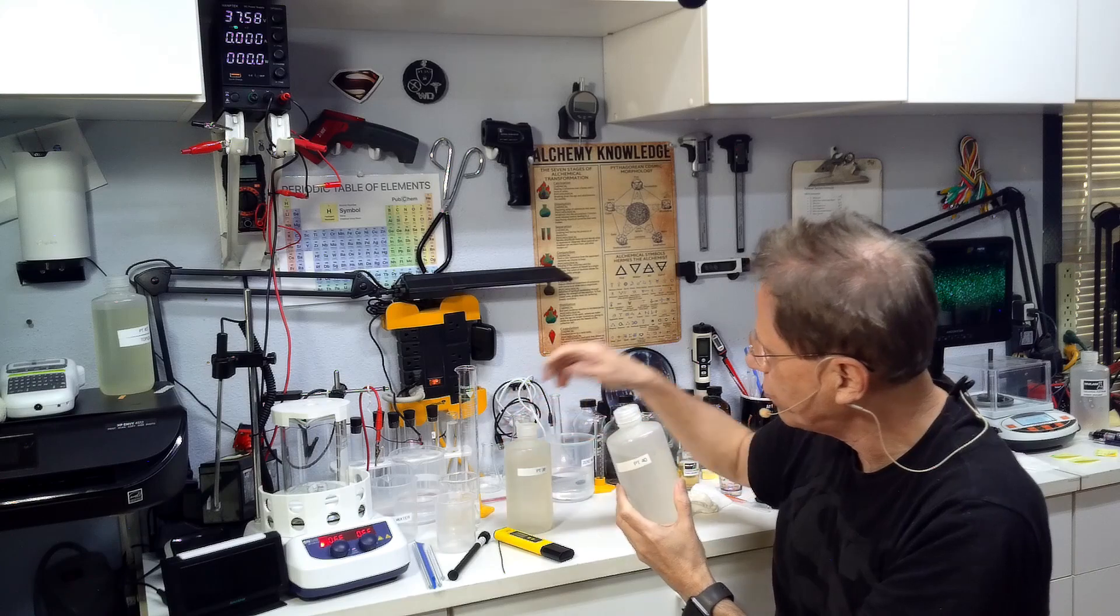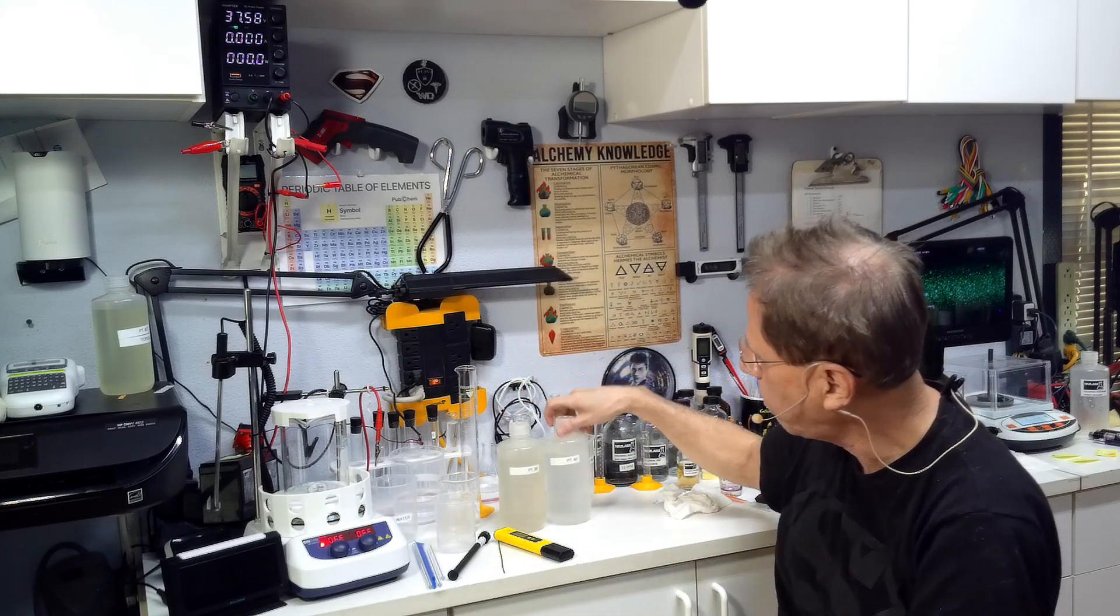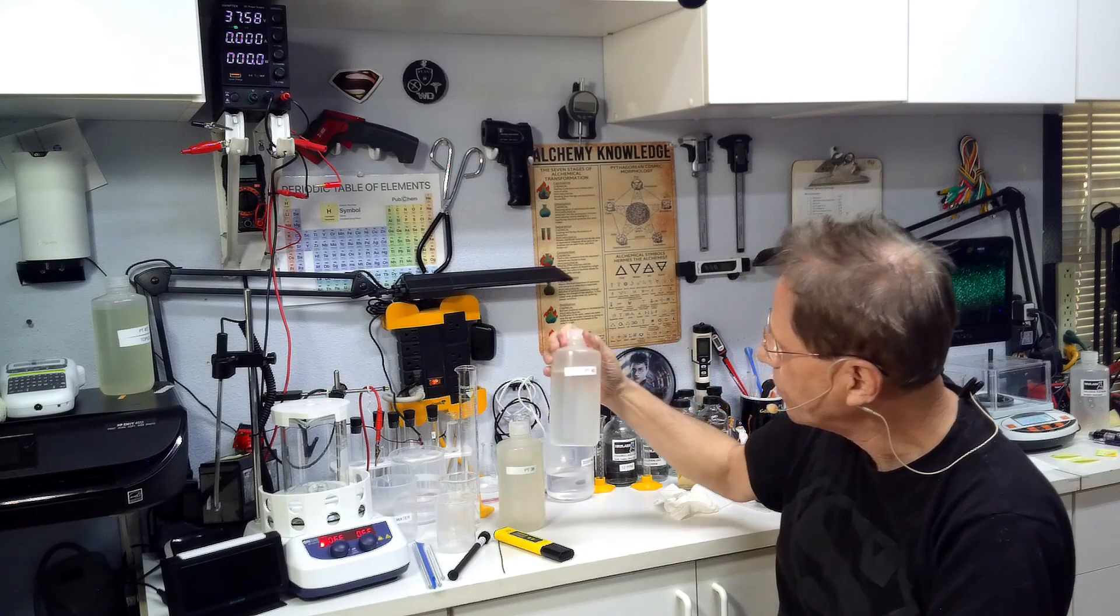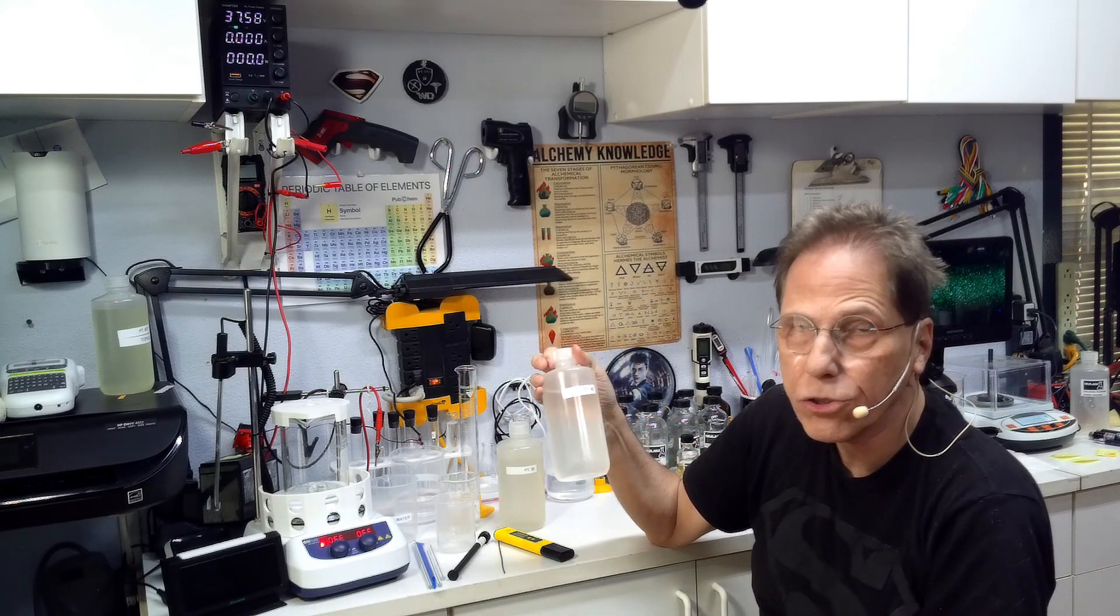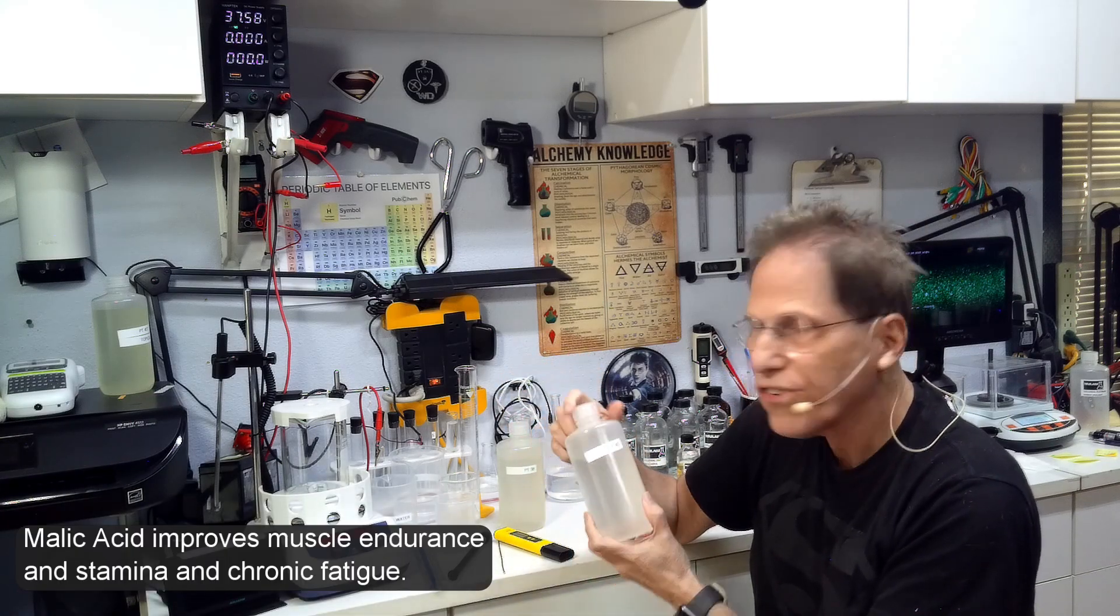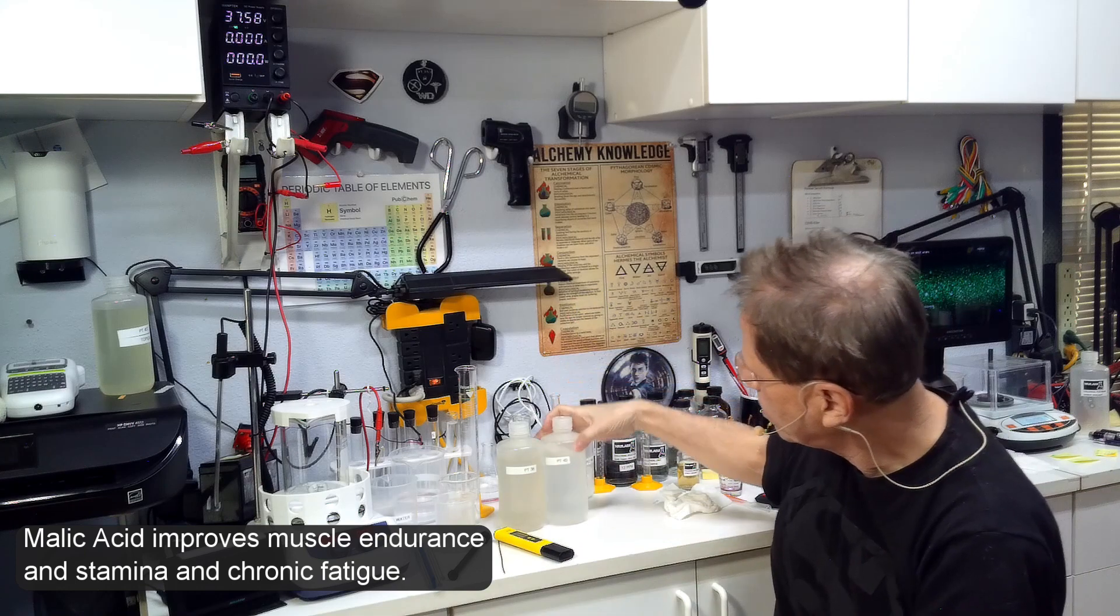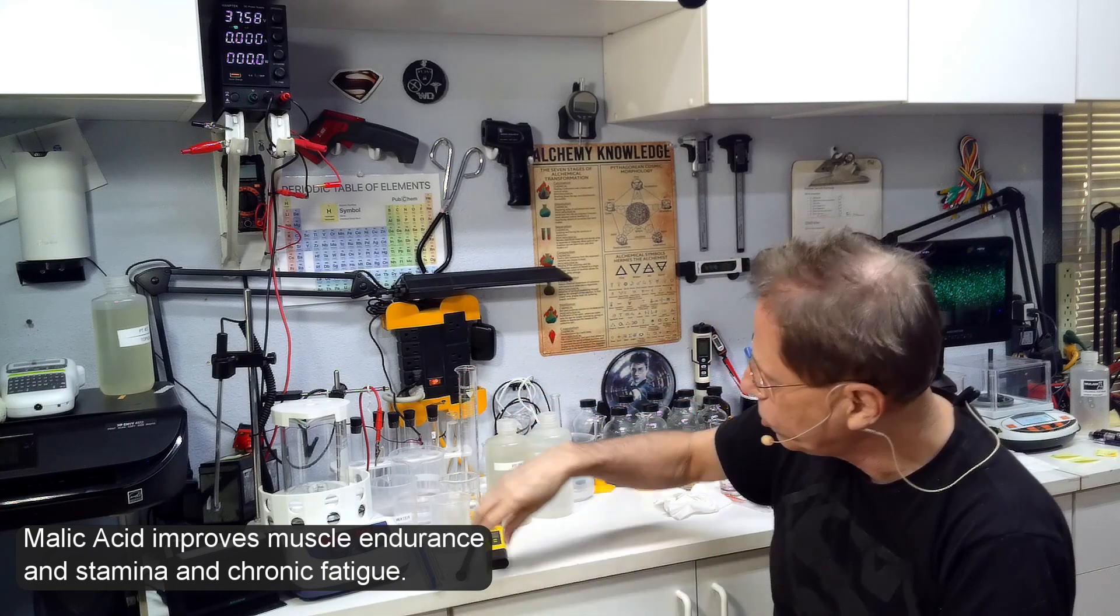On this solution I used malic acid to lower the pH down to 7.2. On this solution I used ascorbic acid to lower the pH to 7.2, and as you can see, this solution is yellowish and this solution is clear. So know that if you use ascorbic acid or citric acid you're going to get a light yellow tint to your colloidal platinum. I like mine clear and I think malic acid has some good health properties, so I use malic acid.